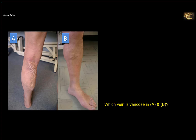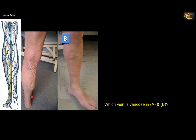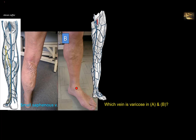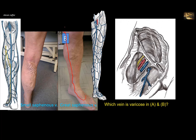Which vein is varicose in A and B? In A, the varicose vein is posterior to the leg, coming from the lateral side of the foot behind the lateral malleolus, with varicosities ending in the popliteal fossa — this is the small saphenous vein, which drains into the popliteal vein. In B, the varicose vein is on the medial side of the anterior aspect of the leg — this is the great saphenous vein, which starts from the medial dorsal venous arch, passes in front of the medial malleolus, and eventually drains into the femoral vein at the femoral triangle.